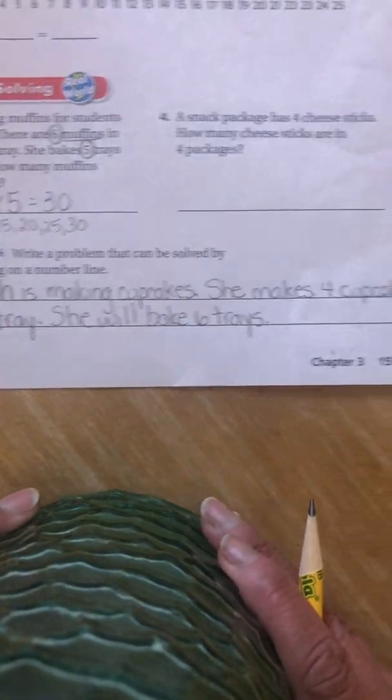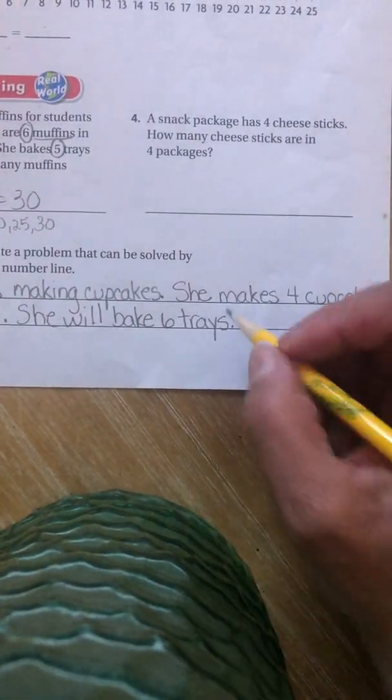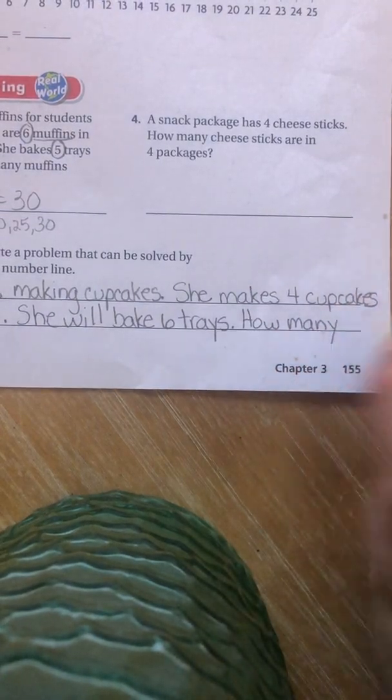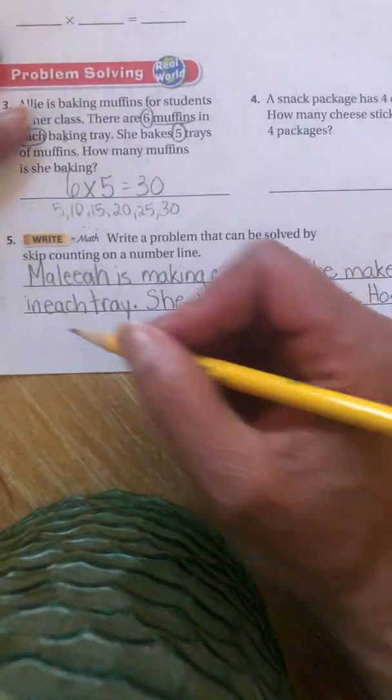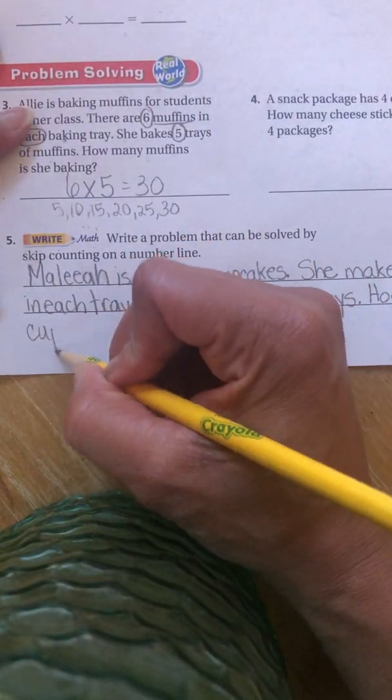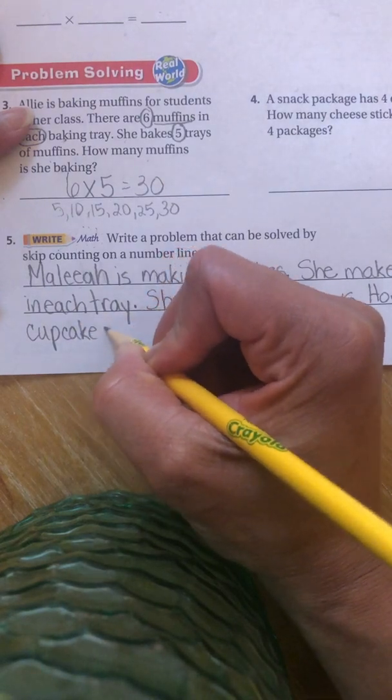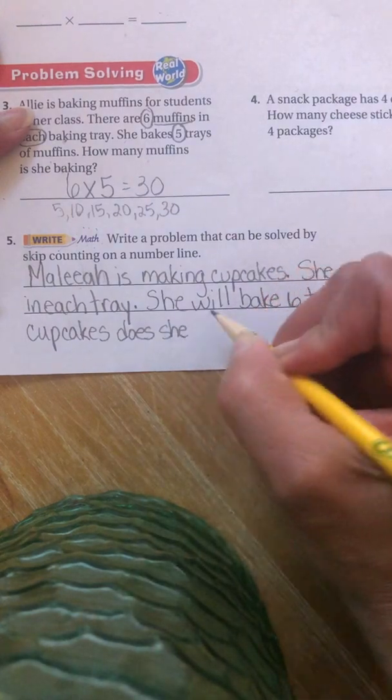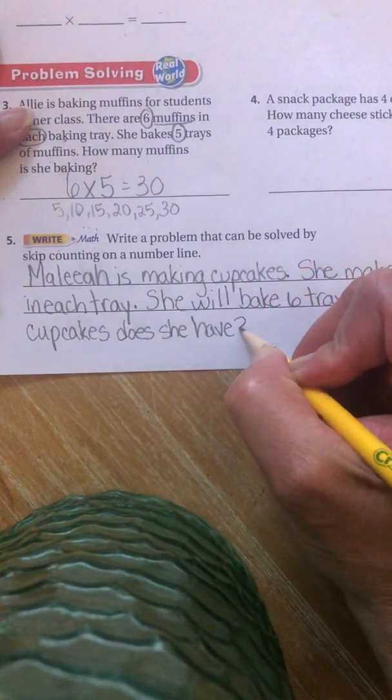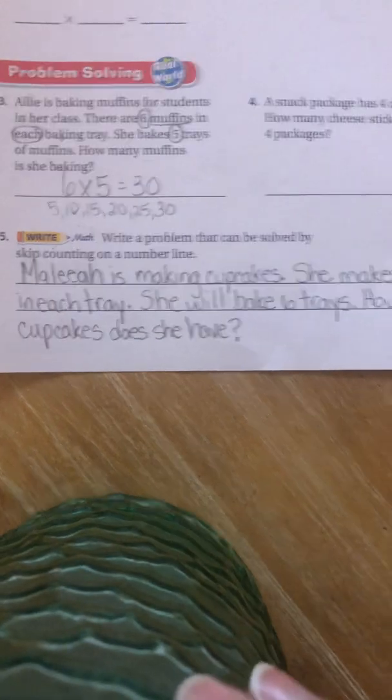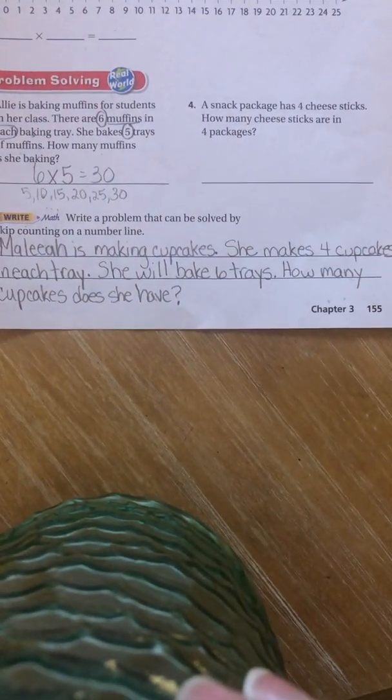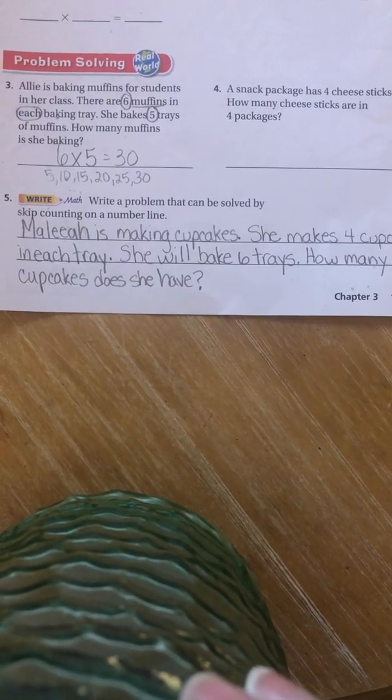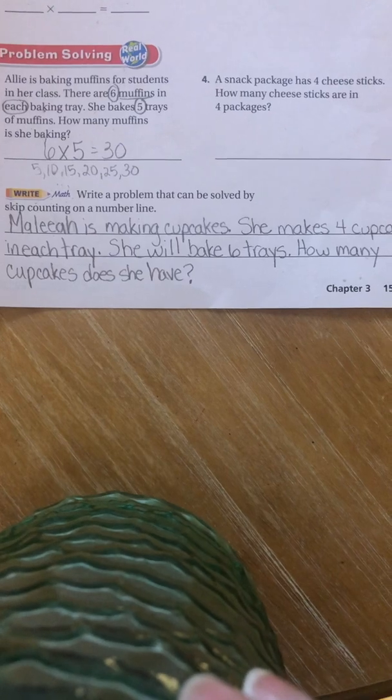So if one tray only holds four cupcakes, she's going to bake six of those trays because she needs to make a lot of them. So again, she's making cupcakes. One tray holds four cupcakes. So she's going to make six of those trays. Now here comes the question. How many cupcakes does she have? So here's your question. After, she's making six trays of four, how many cupcakes does she have? I will leave it there for a few seconds so you can copy.